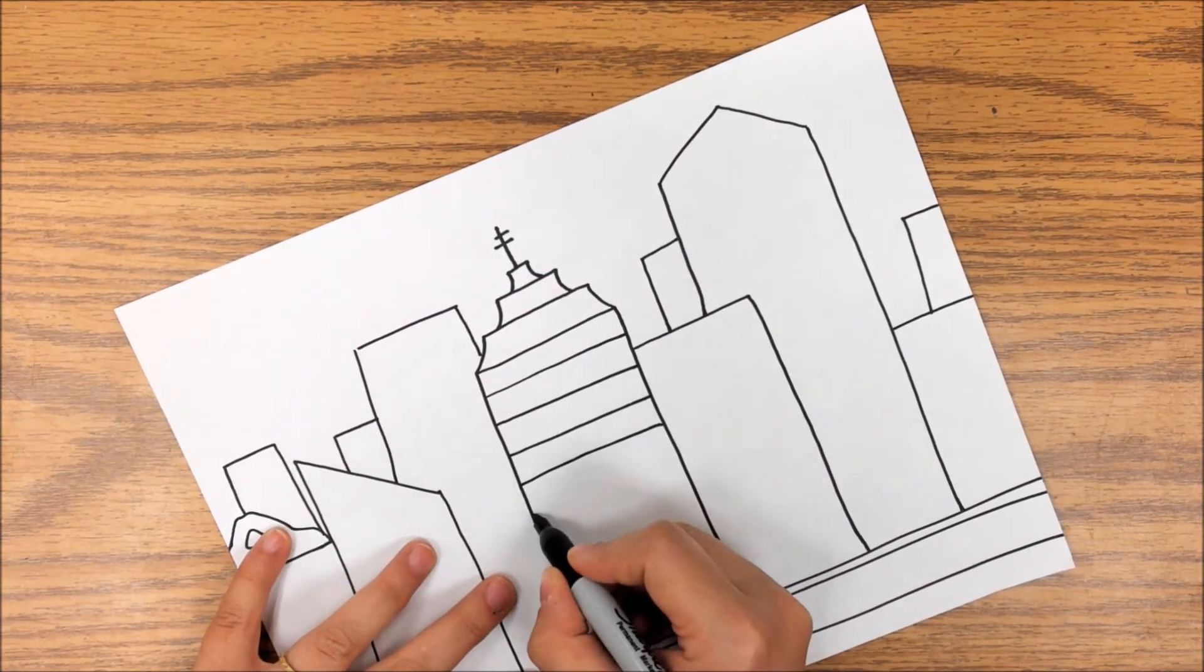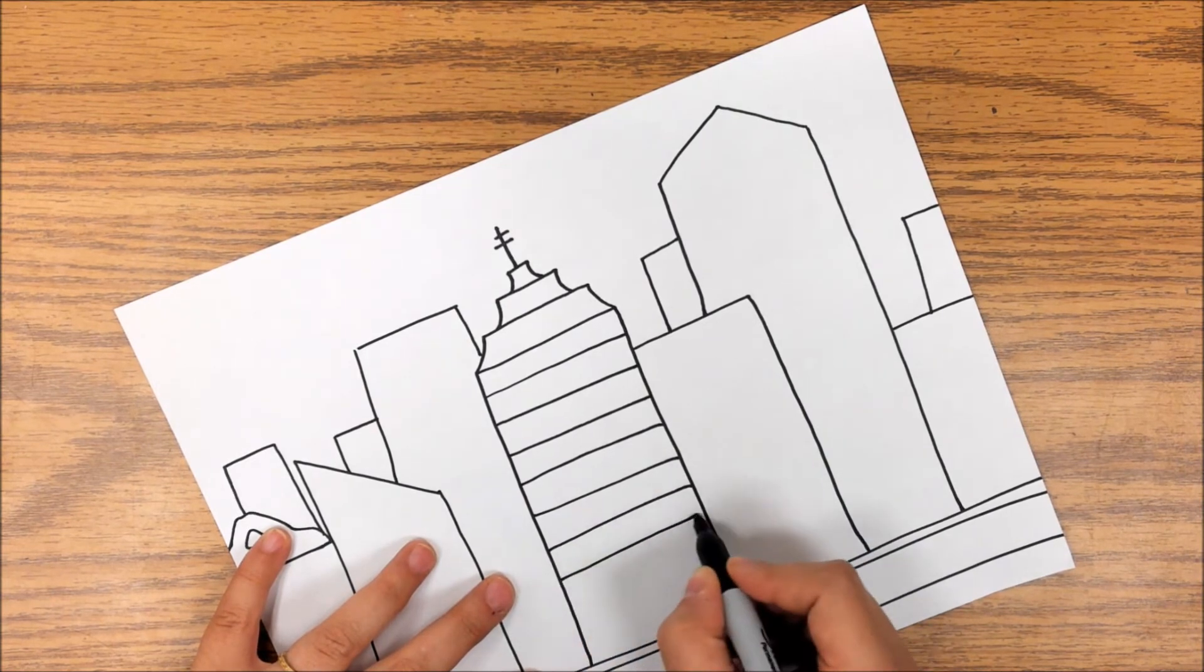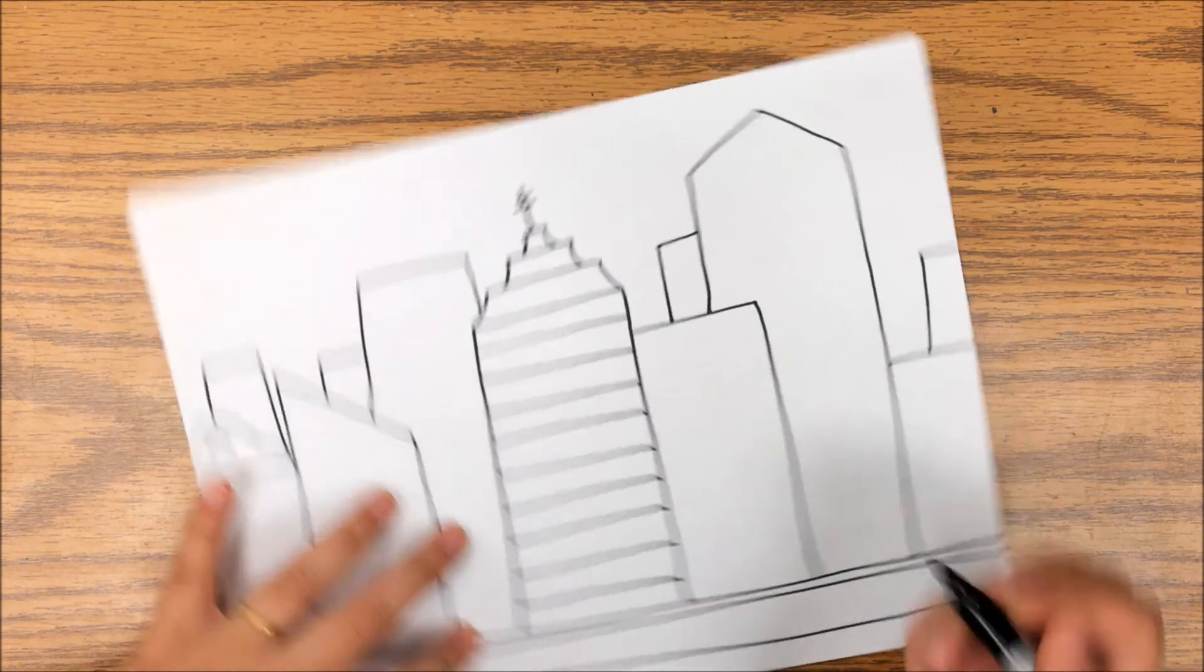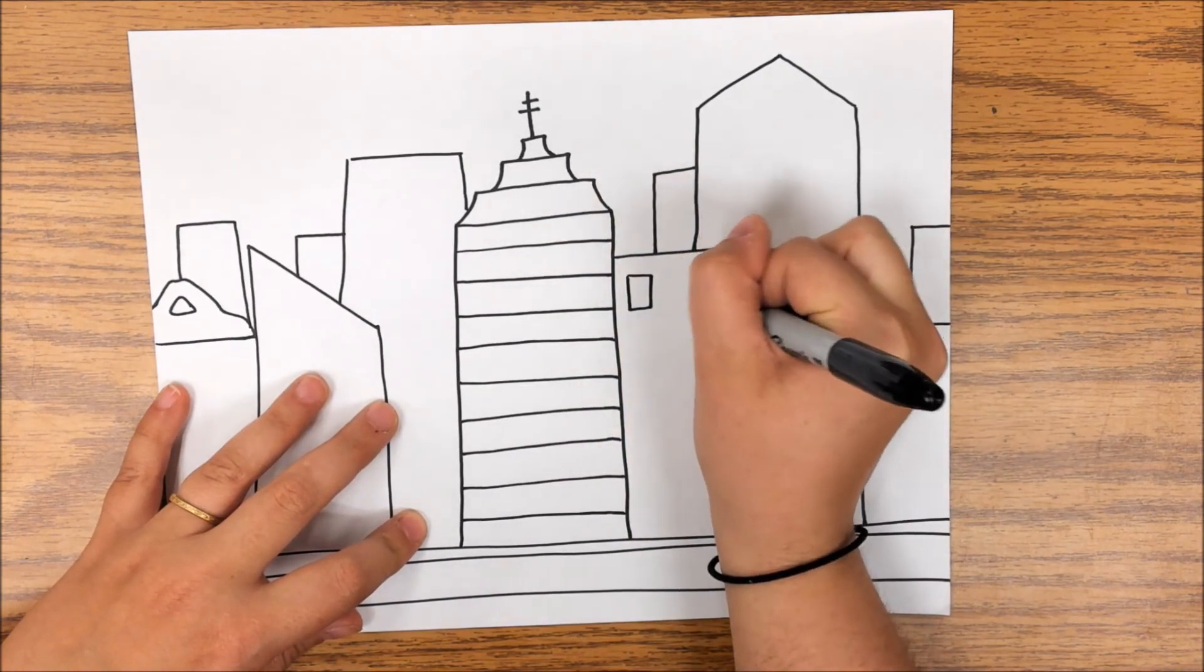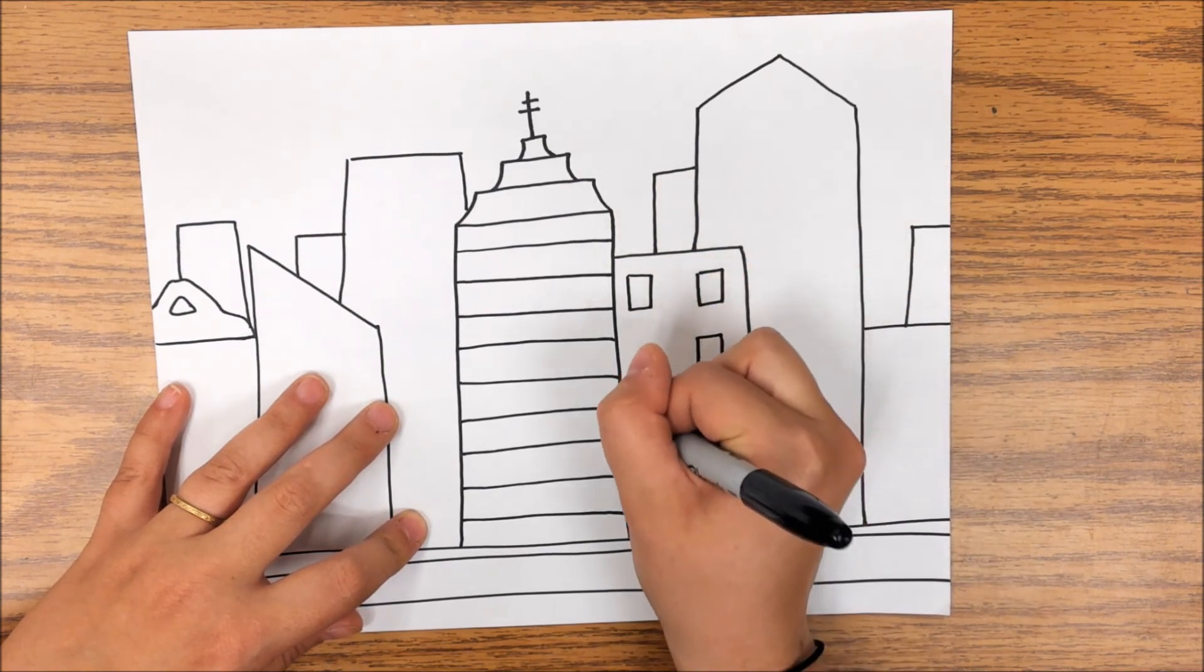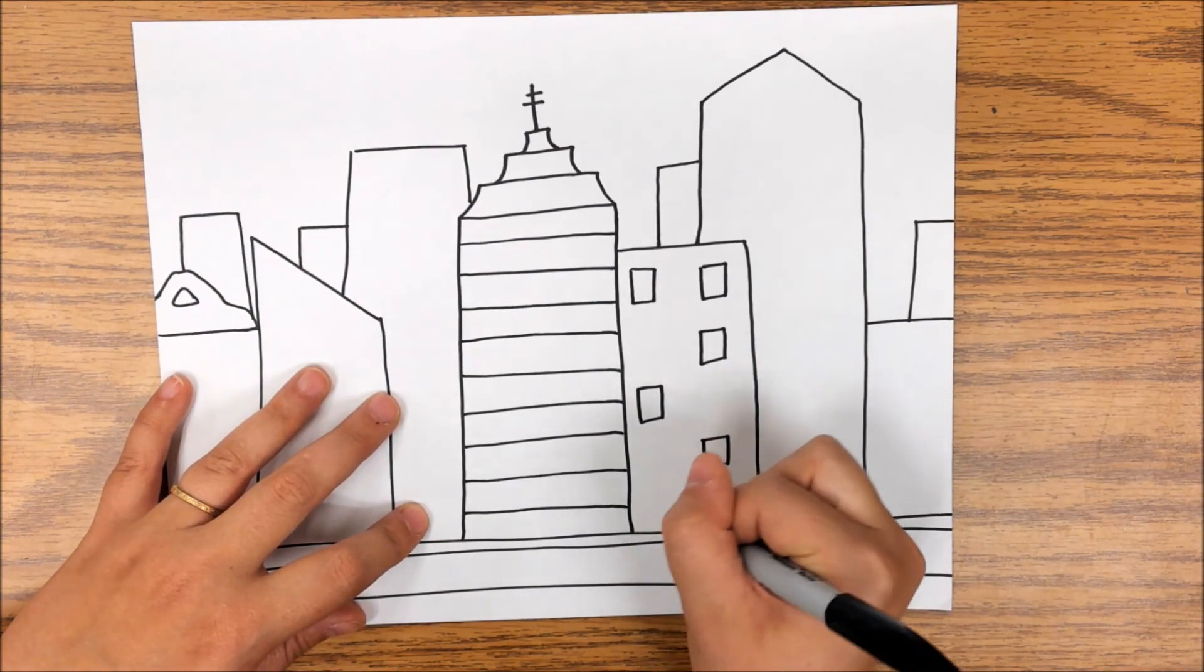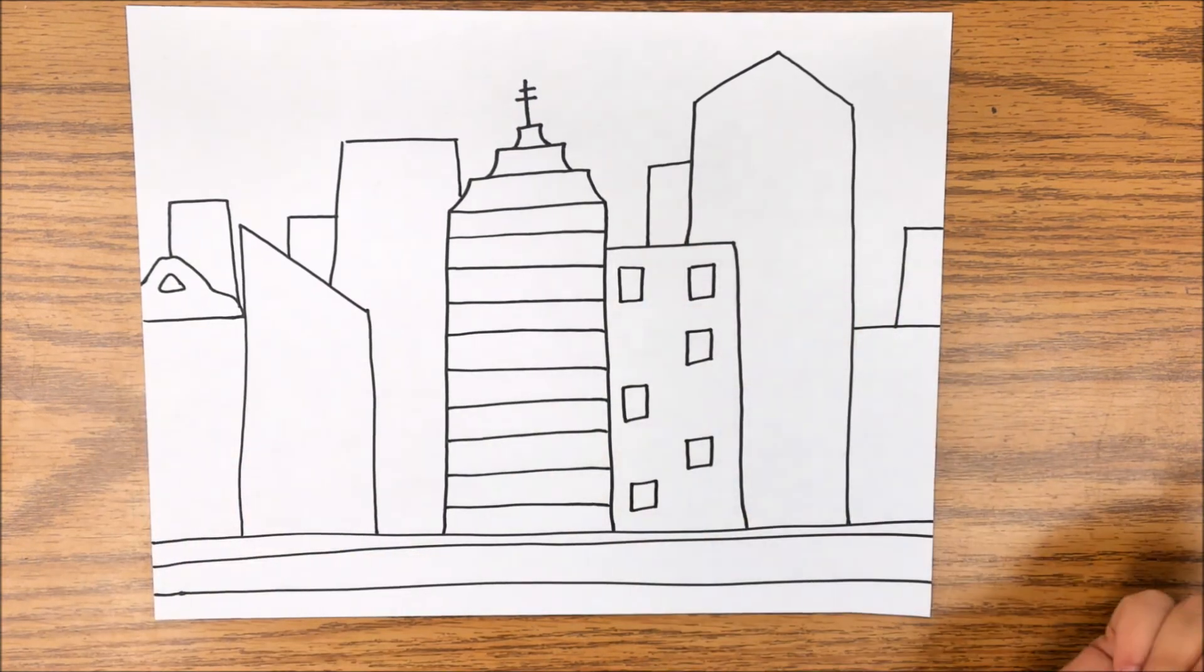So you guys go ahead, get going on this. You can look at my example pages if you need some ideas of details or how you might want to do this. And another thing you could do today is you could go in if you wanted to and trace it out in black as well, so that your details are really standing out on your buildings. So you guys go ahead, have fun.